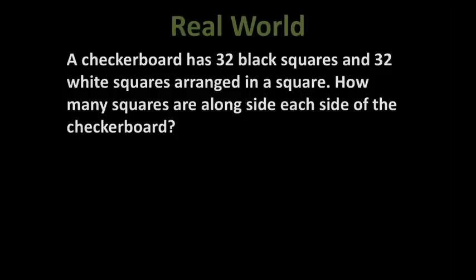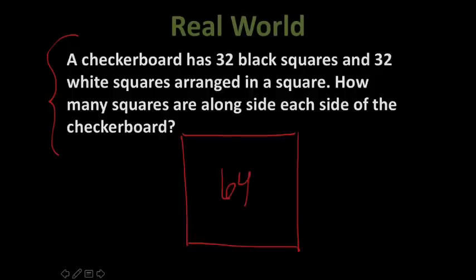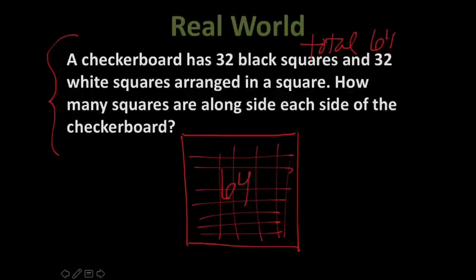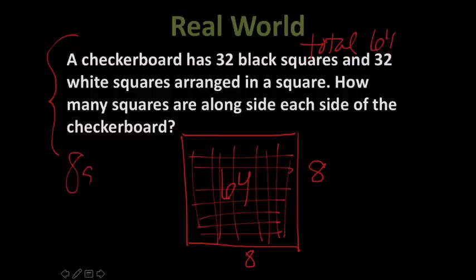Now these next two are real world problems. I want you to copy the information down. Hit pause, and I'm going to get you the answer to this one. So checkerboard has 32 black squares, 32 white squares arranged in a big square. How many squares are along each side of the checkerboard? So hit pause and I want you to try it. All right, now if it has 32 black squares and 32 white squares, that means there's a total of 64 squares in my big square, however they're laid out. Okay, 64 squares. So if I have 64 squares total, how many do I have on each side? Eight. Eight times eight is 64. Eight squares.